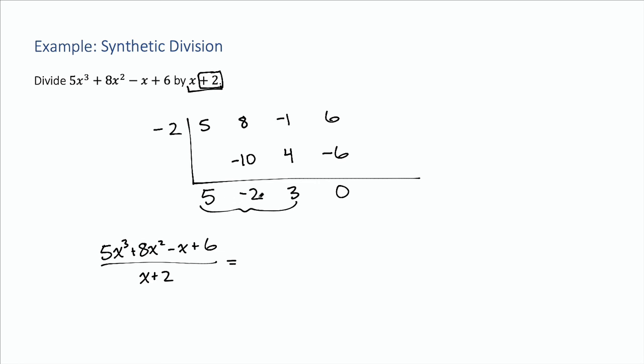These are our new coefficients. We've got 5x² now, because we just dropped down by 1 power from what we started with, minus 2x and plus 3.